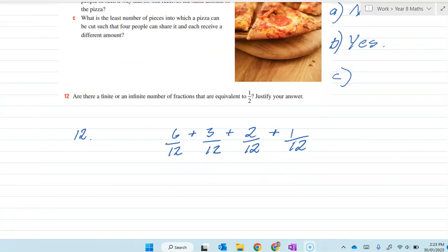In part C, what's the least number of pieces a pizza can be cut into so that four people can share it and each receive a different amount? Let's look at it quite simply, so first person gets one piece.